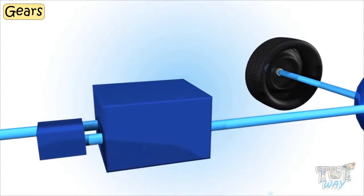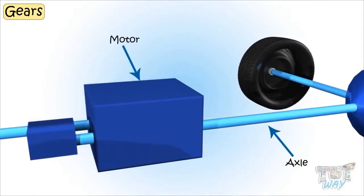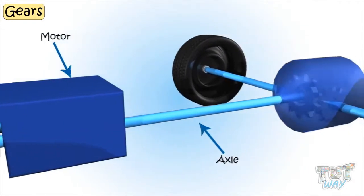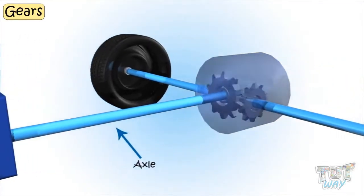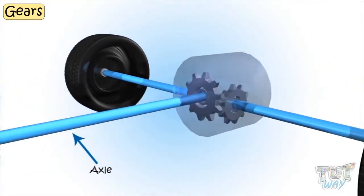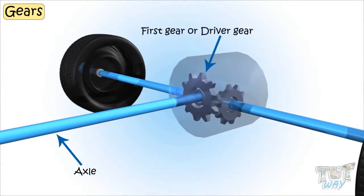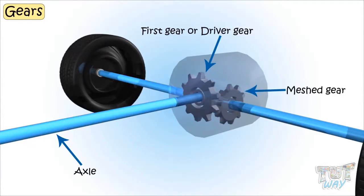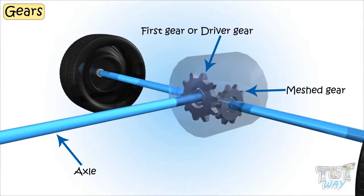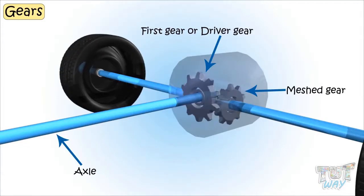The axle can be connected to some motor that runs the axle attached to the first gear, or the driver gear. The driver gear then turns the next meshed gear, which can be attached to some other axle that is required to be moved.